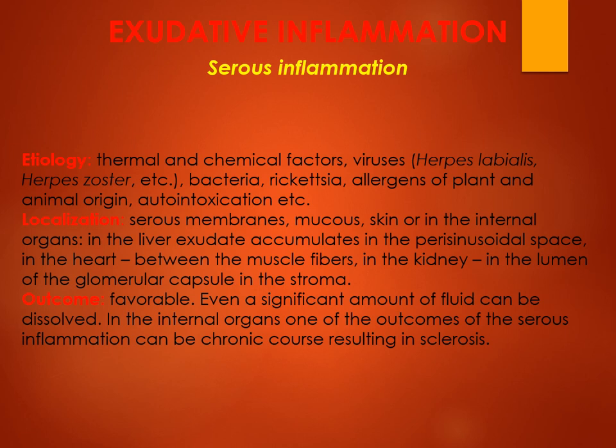Exudative inflammation is of many types: serous, fibrinous, purulent, putrefactive, hemorrhagic, mixed, and catarral. The type of exudate determines the type. In purulent inflammation, there is a predominance of neutrophils. The etiology includes thermal and chemical factors, for example herpes labialis and herpes zoster, with localization on serous membranes, mucous membranes, and skin. It can be chronic, and the final outcome leads to sclerosis.